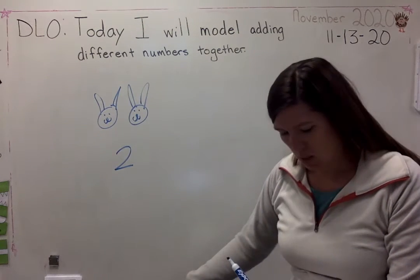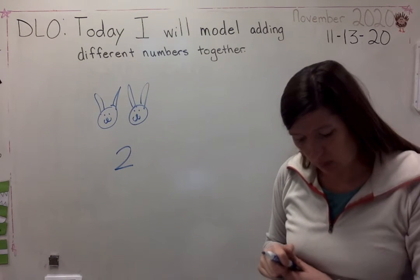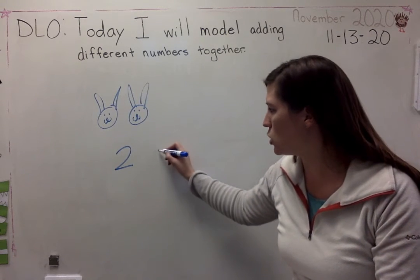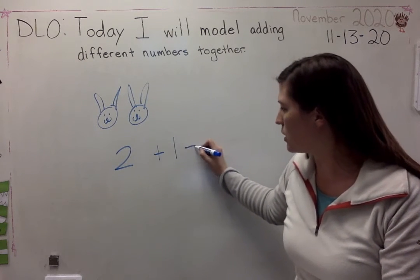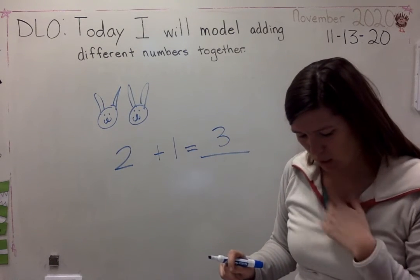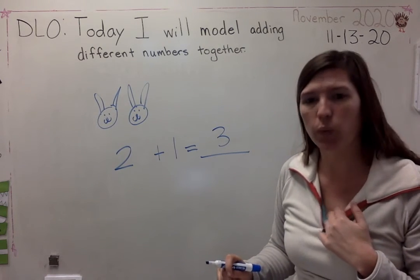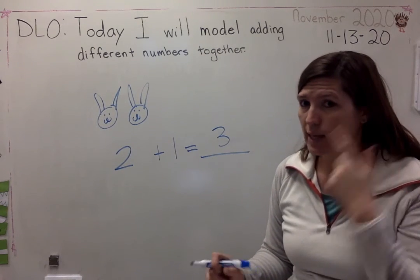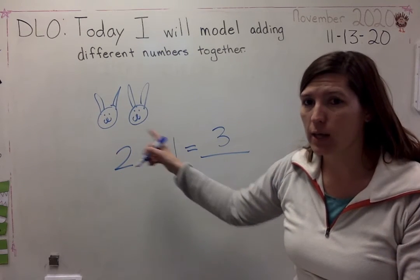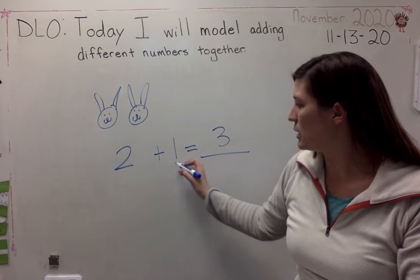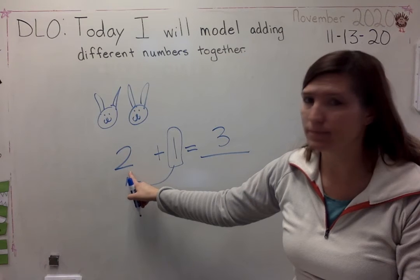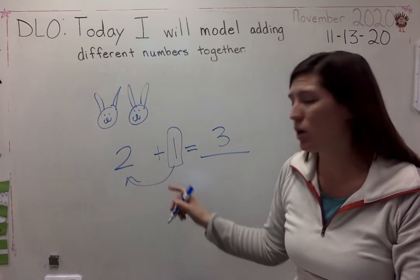It says that Emily says the answer is three rabbits. Is she right or wrong? So Emily wrote an equation two plus one equals, she says, three. She says the answer is three. Is she right or wrong? The story said two rabbits were in a hole and the same number came. Is this the same as that? It is not the same. Two and one are different numbers.